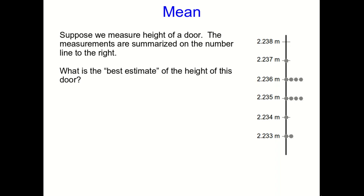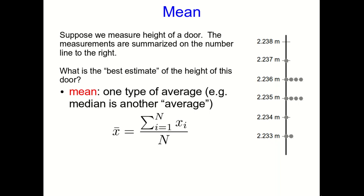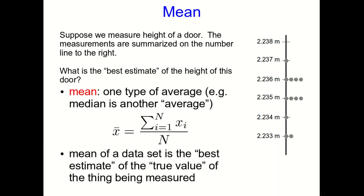So the question now is what should we quote as the height of the door? What we would call our best estimate or the most representative measurement of the height of the door? And what we normally choose is the mean, which you've probably met in earlier schooling. It's one type of average. The median is another average, but the one we want here is the mean.